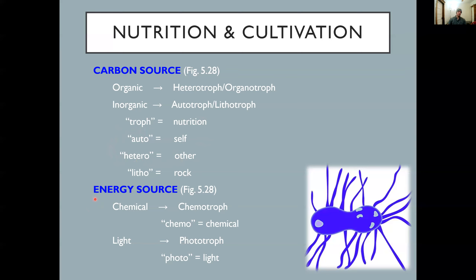We can also separate organisms based on the type of energy source they use — and this is different from the carbon source. Energy sources can be one of two things: chemical energy, obtained from the breakdown of material, or light energy. Think of plants — these are called phototrophs, where 'photo' means light. Another common inorganic carbon source besides CO2 is CH4, or methane, and these are considered mineral carbon.